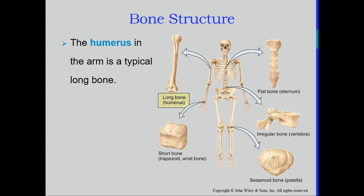First we need to talk about the anatomy of the long bone. The humerus is a typical long bone. Bones are classified by their shape — there are also flat bones, irregular bones, sesamoid bones, and short bones. Flat bones are very thin and usually much wider than they are thick. Short bones have more of a cube shape. Irregular bones have a very odd shape, like a vertebra with its body and processes. Right now we're going to focus on the long bone.